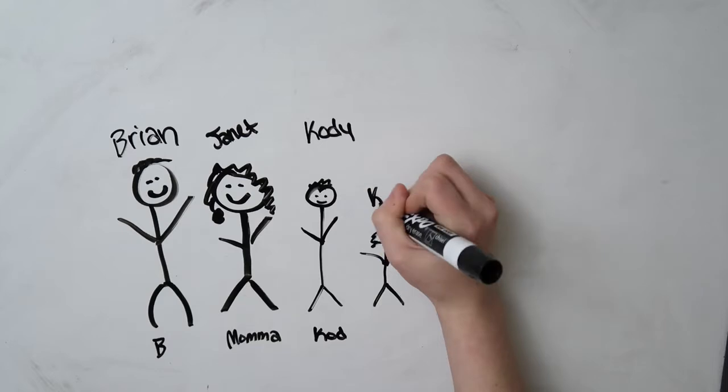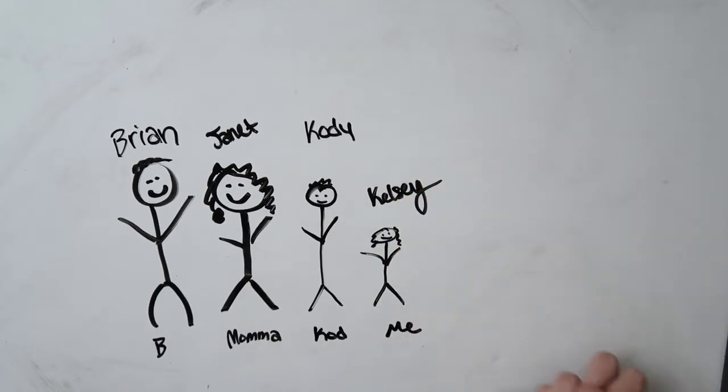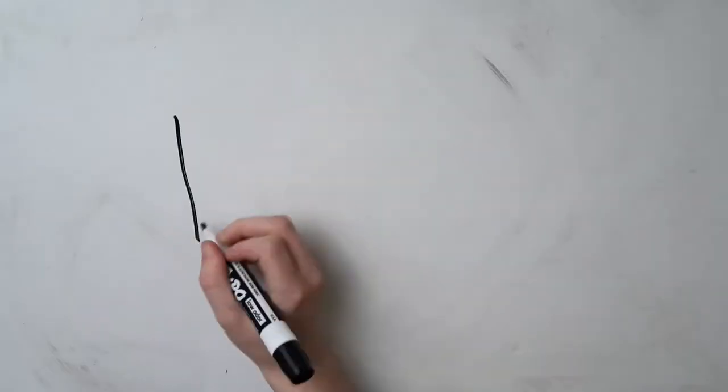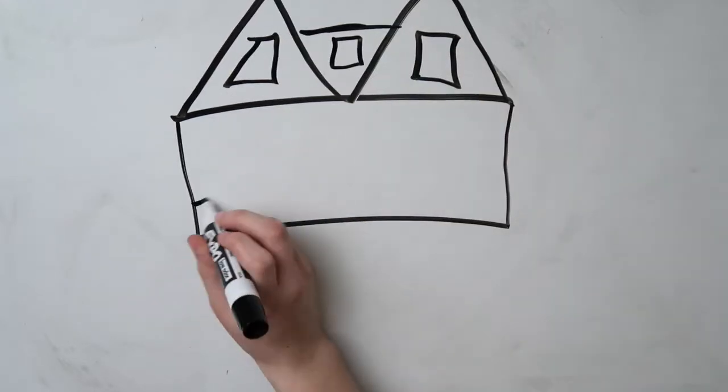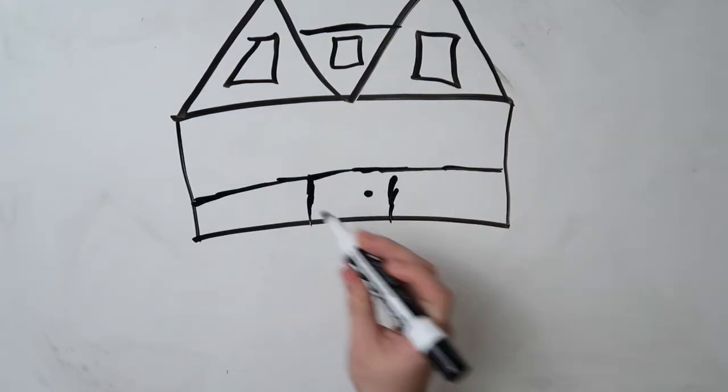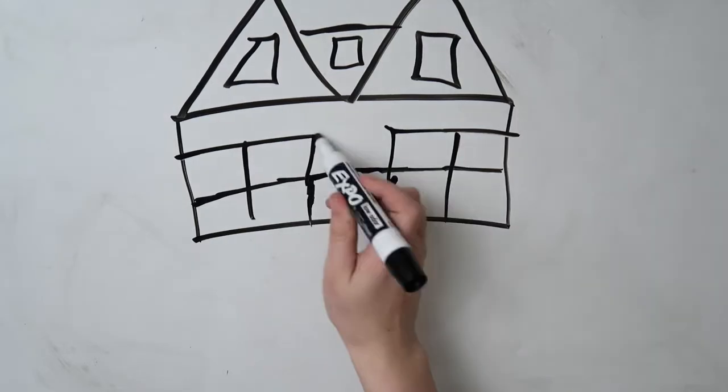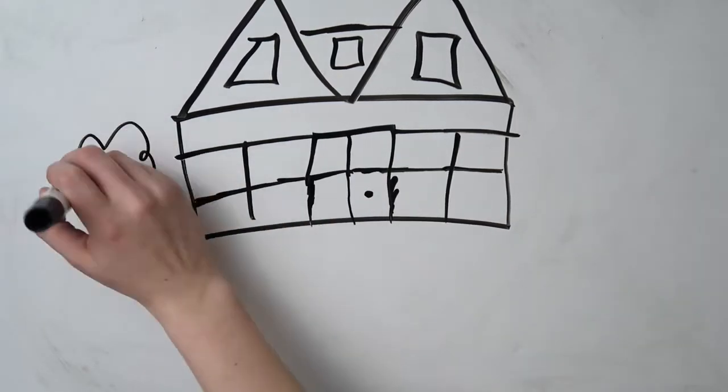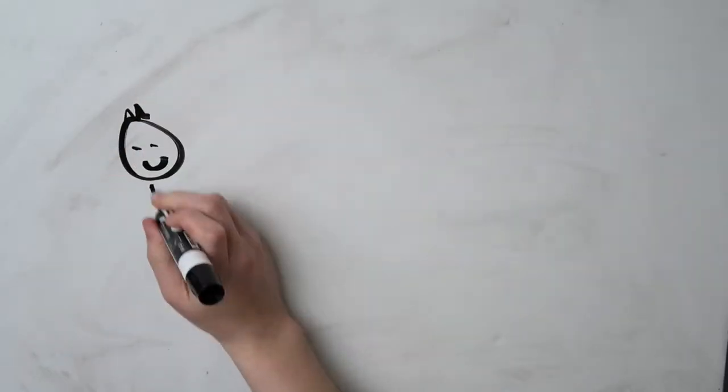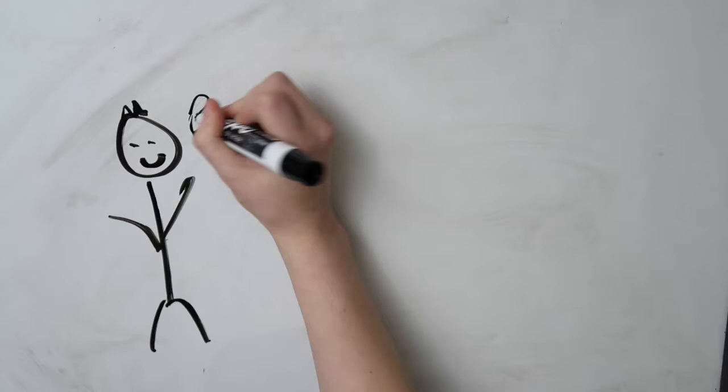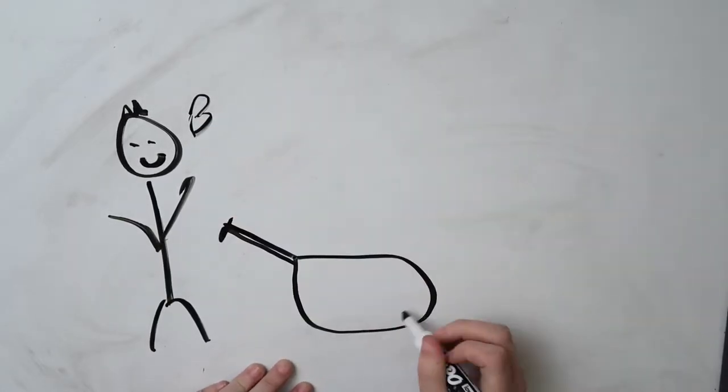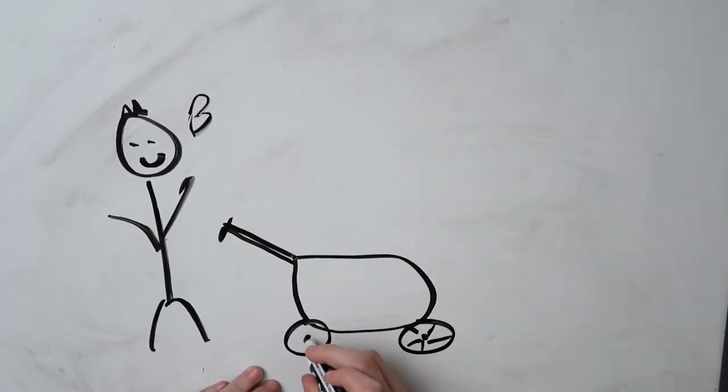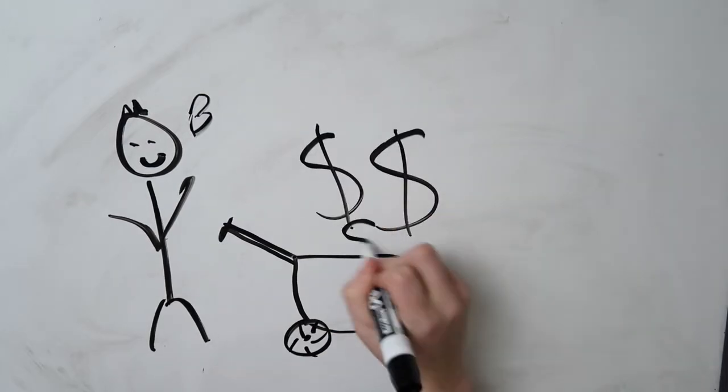My dad built my mom a big dream house and it was huge. Me drawing it right now doesn't give it any justice because it was gorgeous. My dad had a huge lawn care business and it was really successful. We had a lot of money into it and we got a lot of money out of it.